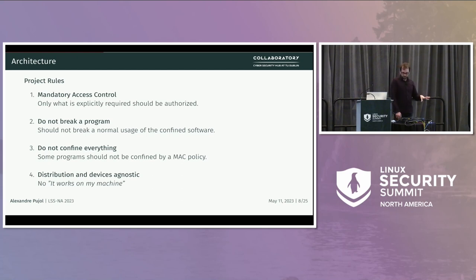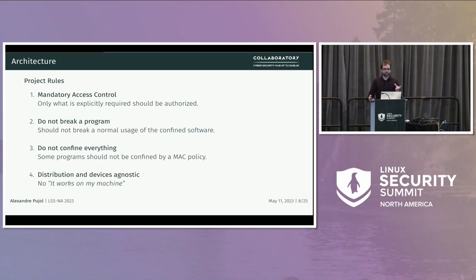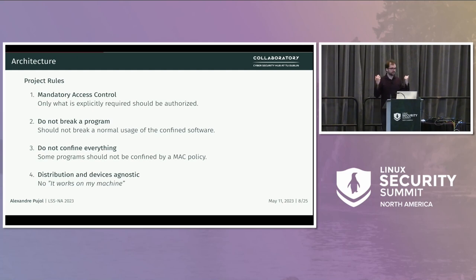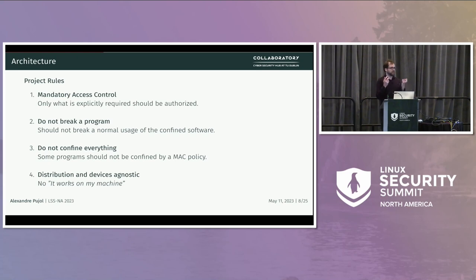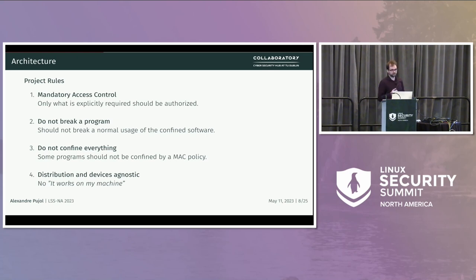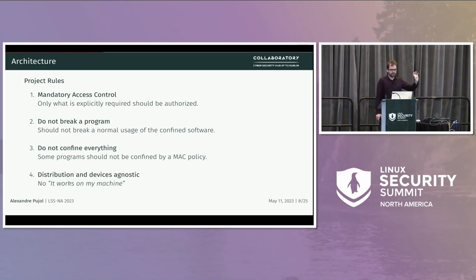Now we know what to confine. A few reminders if you really want to have a good set of confinement: first, this is AppArmor, so this is mandatory access control — we are going to really focus on allowlists, not denylists. It's not always easy to do, and it can be seen as a lazy path to just allow a lot of stuff, but no, we need to stick to the MAC principle. Obviously it should not break a program, which is much more complex than it sounds. You should not confine everything on your computer, and we try to be as device and distribution agnostic as possible.